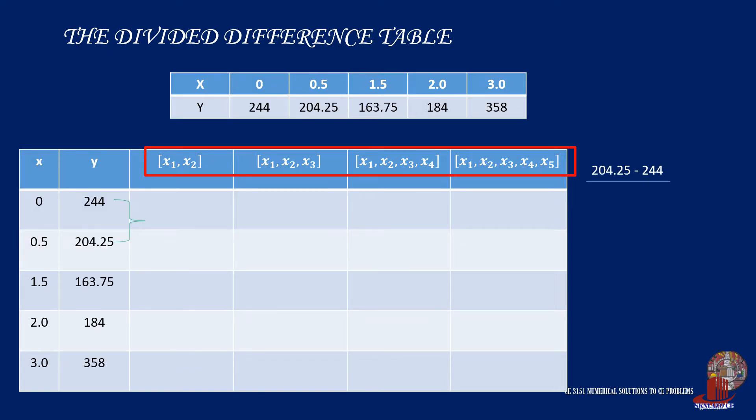204.25 minus 244 upon 0.5 minus 0 is negative 79.5. The same will be done on the succeeding rows like 163.75 minus 204.25 divided by 1.5 minus 0.5, which gives negative 40.50. The next is 184 less 163.75 and this is divided by 2 minus 1.5 and gives 40.50.